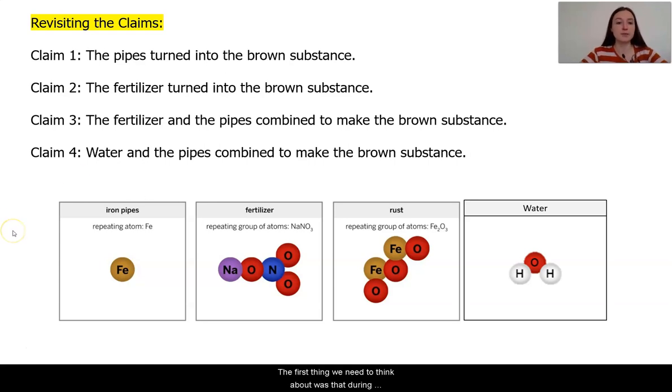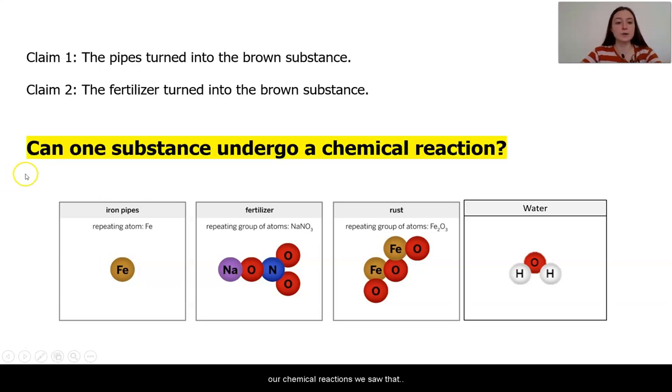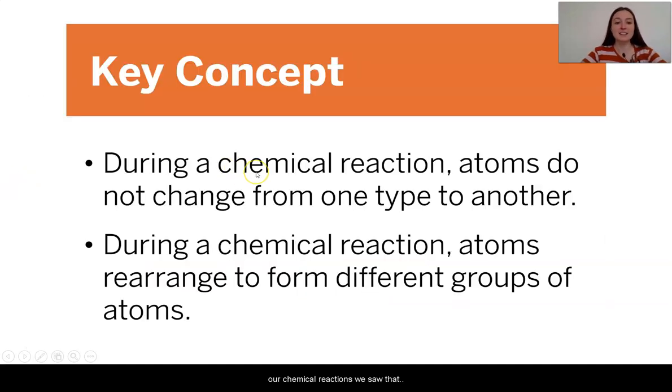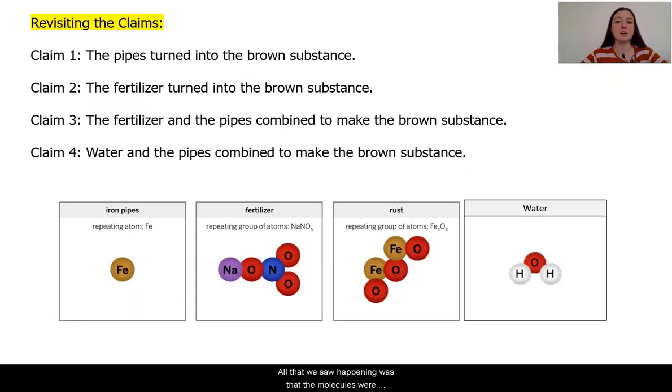The first thing we need to think about was that during our chemical reactions we saw that the reaction took place when atoms rearranged themselves in the molecules that were already existing. No atoms were changing into different types during our investigations in the digital model. All that we saw happening was that the molecules were bouncing around and atoms were breaking off and reattaching in different ways.